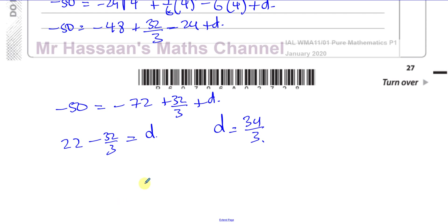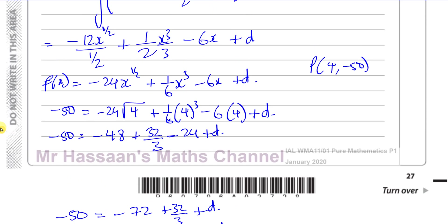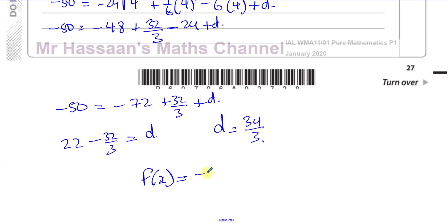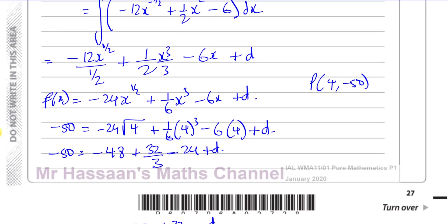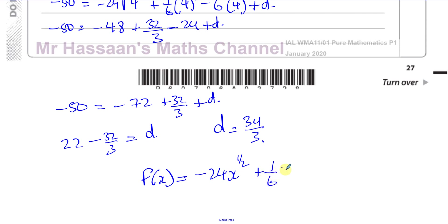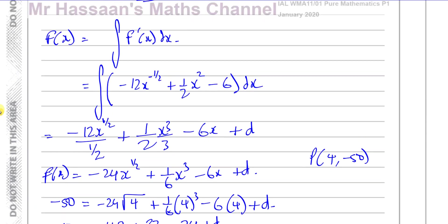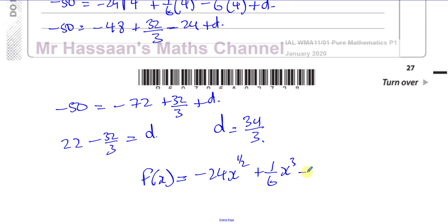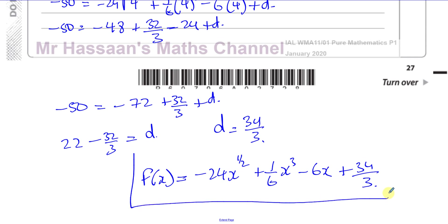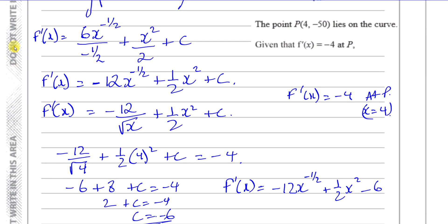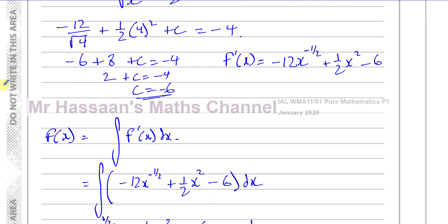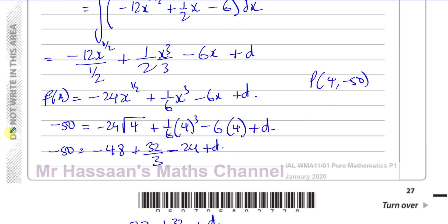So f of x equals −24x^(1/2) plus (1/6)x³ minus 6x plus 34/3. That is the equation of the curve, found by integrating twice and using the given information to find the constants of integration c and d.